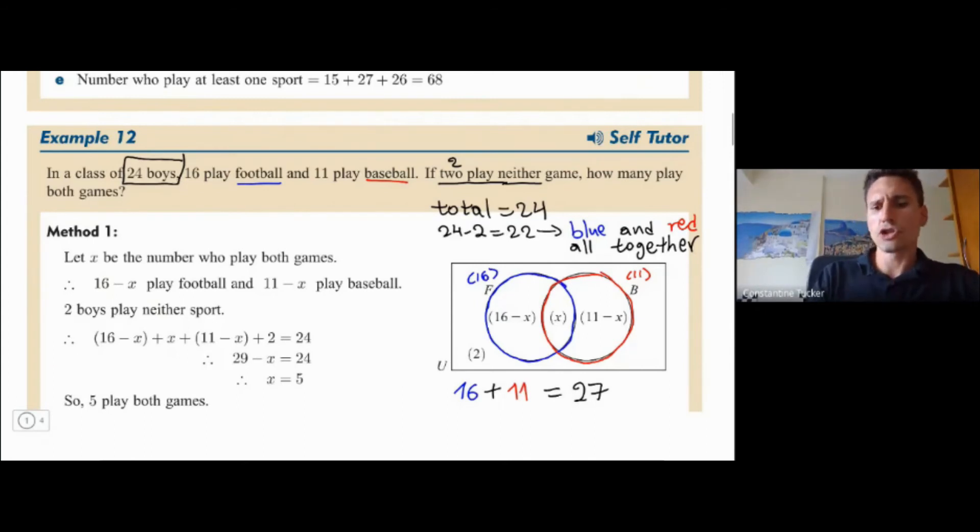But it should be 22. So what has happened here, if it should be 22, and it's 27, it means that there's a difference here, which we need to work out 27 minus 22 is equal to five.